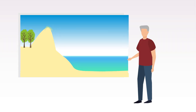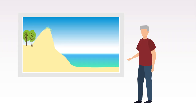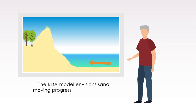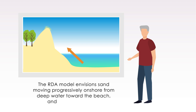In 2005, Robin Davidson-Arnott of the University of Guelph proposed an alternative model, the RDA model, that envisioned sand moving progressively on shore from deep water toward the beach and then to the dunes.